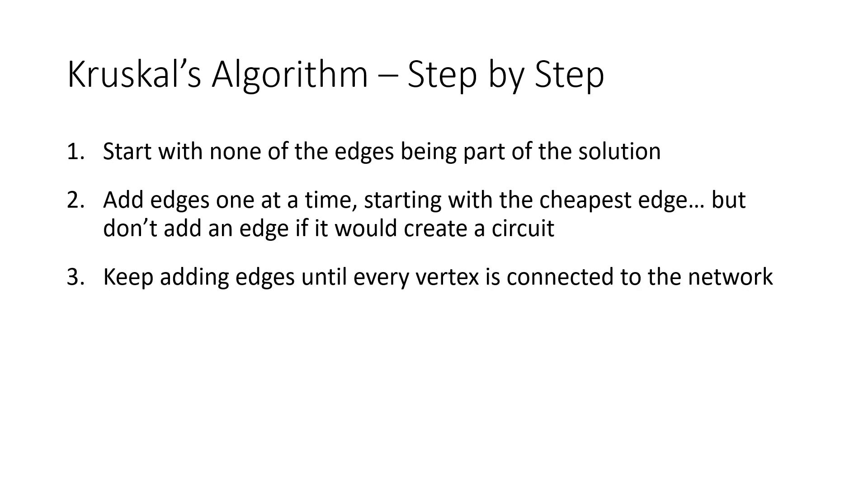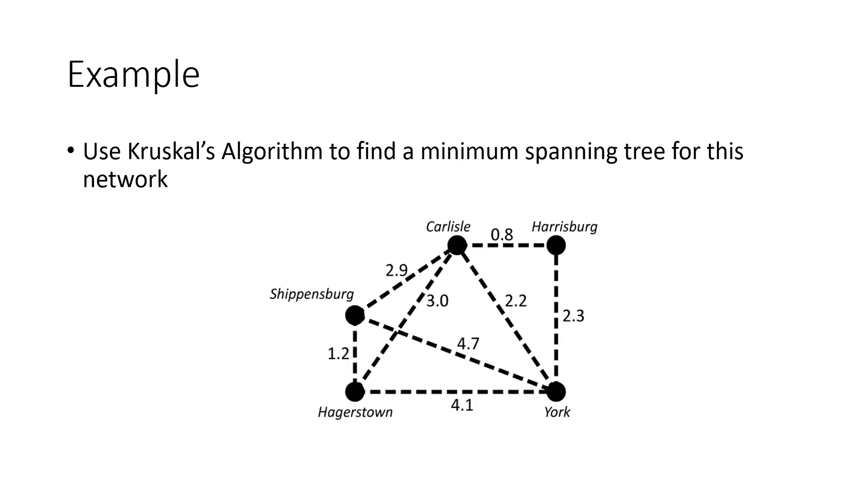Here's how it works. Step one is we start with none of the edges being part of the solution. And then we add edges one at a time, starting with that cheapest edge, but we don't add an edge if adding it would create a circuit. Because we know we don't need circuits, so we skip over that edge if adding it would create a circuit. And we keep doing that until every vertex is connected to our network.